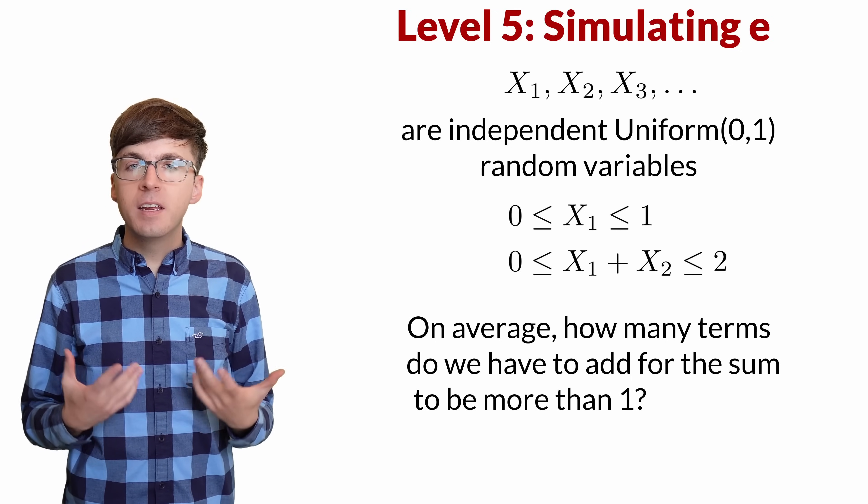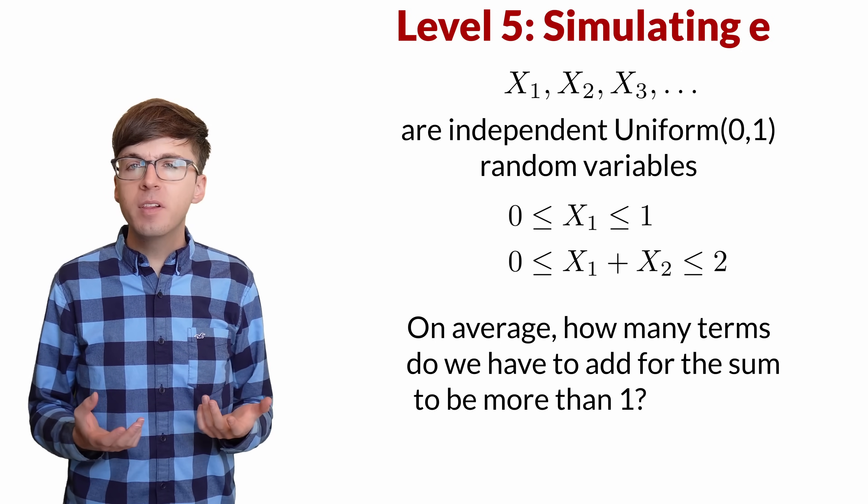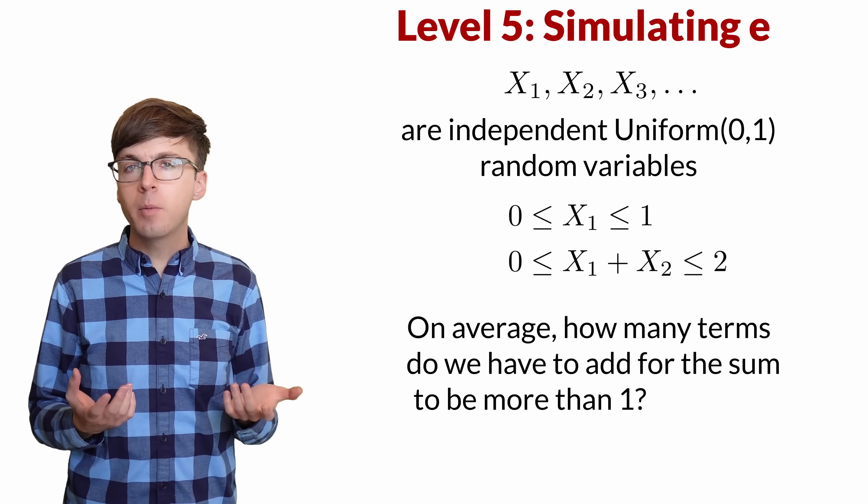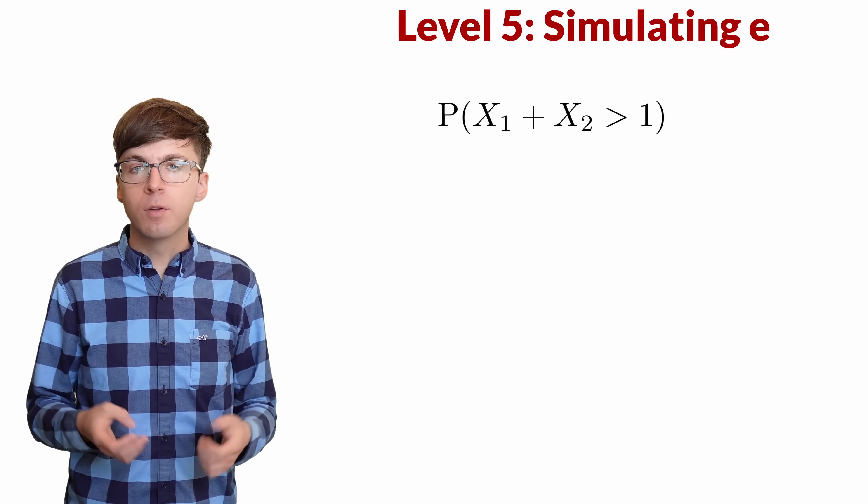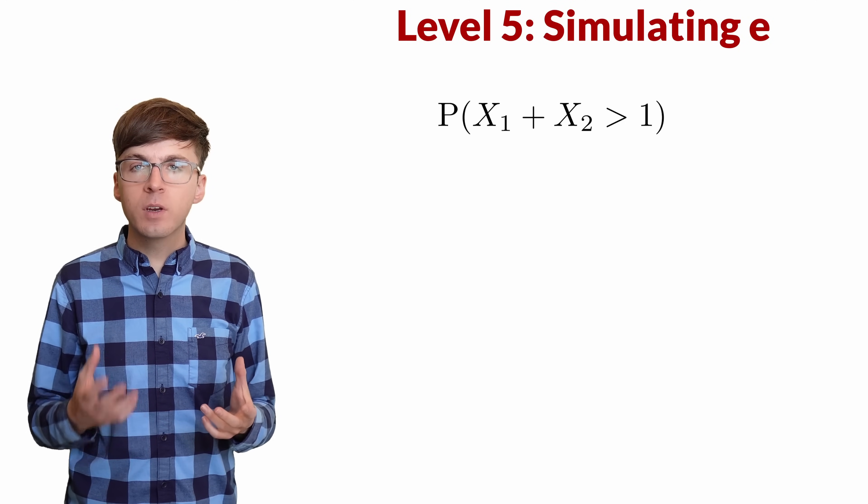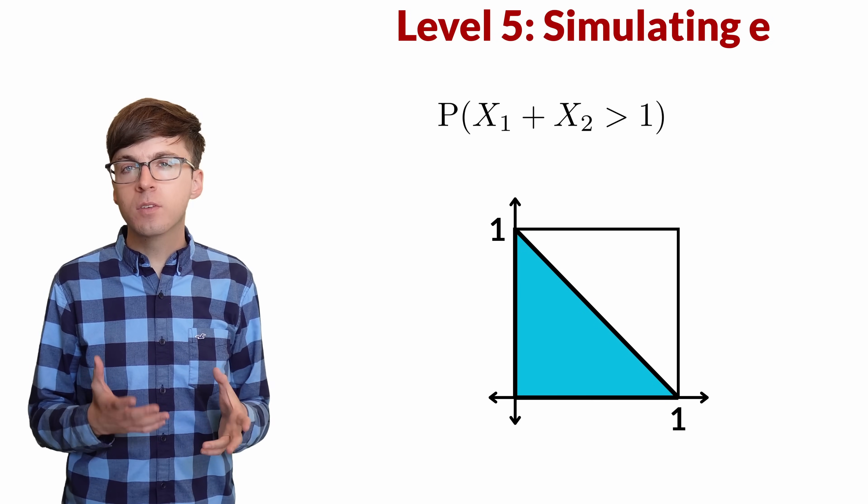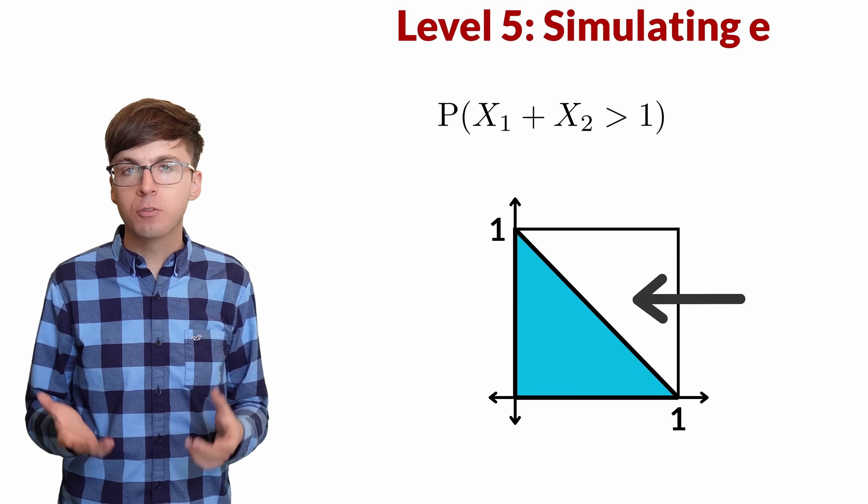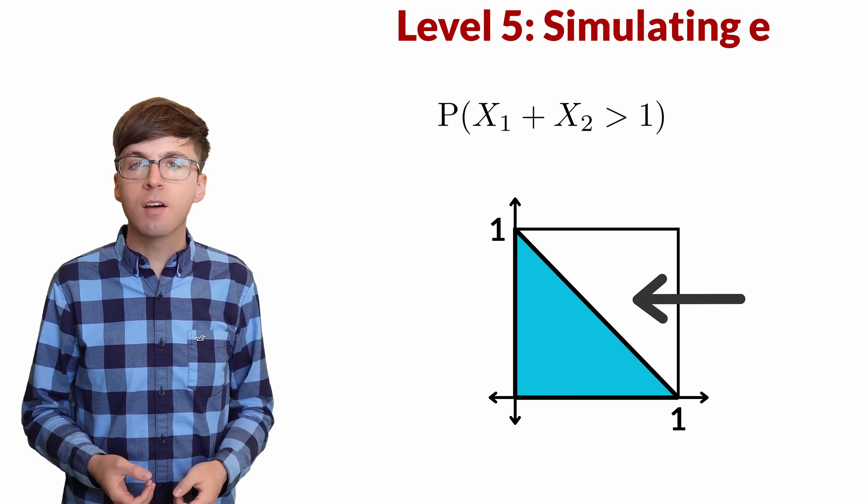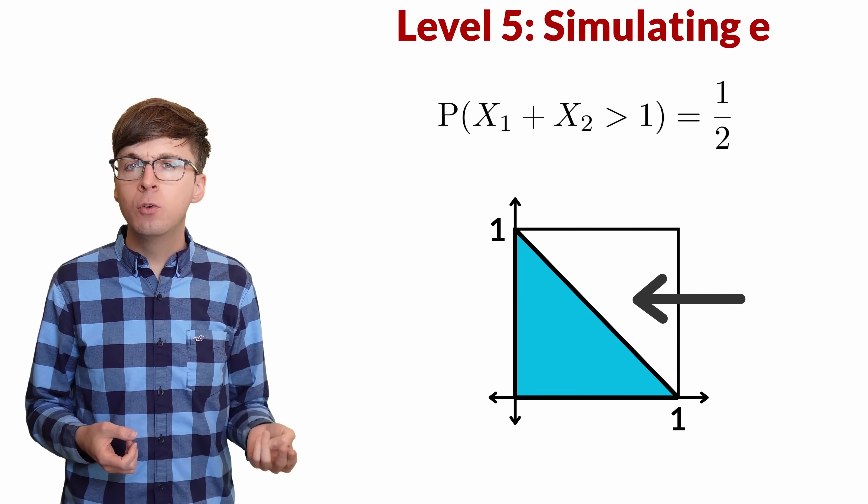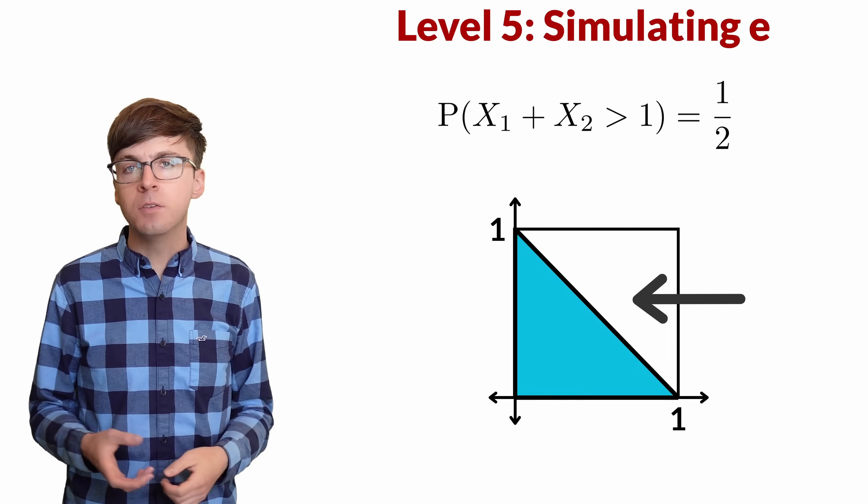We can start by finding the probabilities. The probability it takes two terms is the probability that x1 plus x2 is greater than 1. The point x1, x2 lies in this unit square. The part of the square where the sum is greater than 1 is this upper triangle, which has area 1 half. So there's a 1 half probability that with just two terms, the sum exceeds 1.